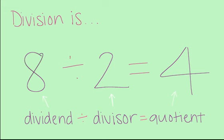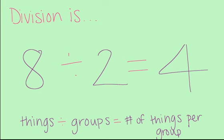But these terms are kind of hard to understand. So let's try to make it a little bit easier. Now here, we have the same division problem: eight divided by two equals four.